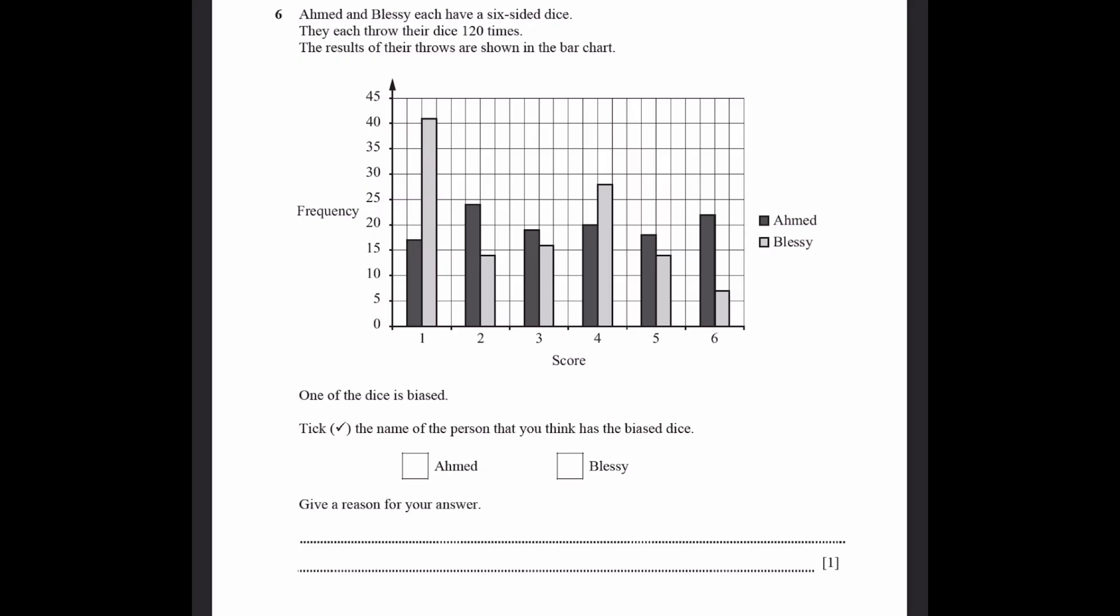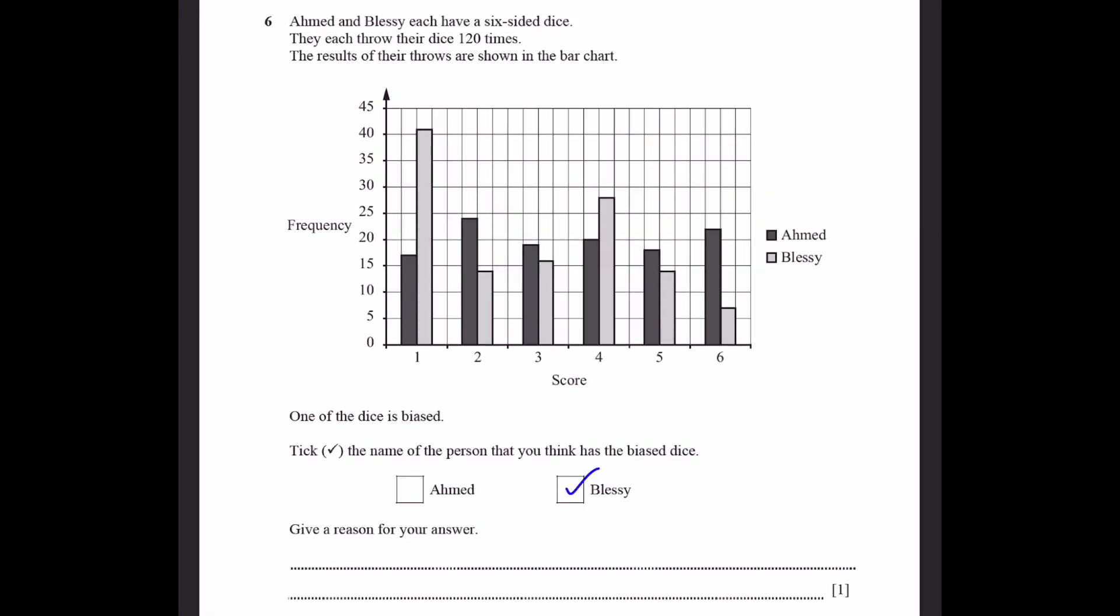Question 6. Ahmed and Blesi each have a 6-sided dice. They each throw their dice 120 times. The results of their throws are shown in the bar chart. Which dice is biased? Take the name of the person you think has the biased dice. The answer is actually Blesi. Because we can see in Ahmed's dice, all the bars are nearly equal height. All of them are around 20.